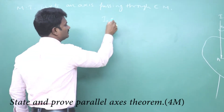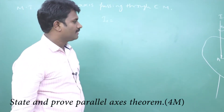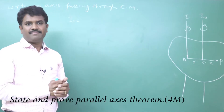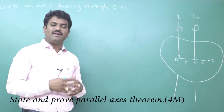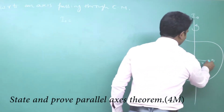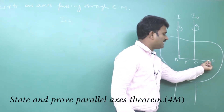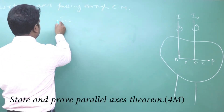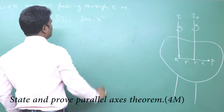The moment of inertia is equal to mass times distance squared. To find the moment of inertia of the system, we consider one particle and find its moment of inertia, then sum over all such particles. Consider a particle P at a distance x from the center of mass. The moment of inertia of this particle with respect to the axis through the center of mass is δI₀ = δm · x².